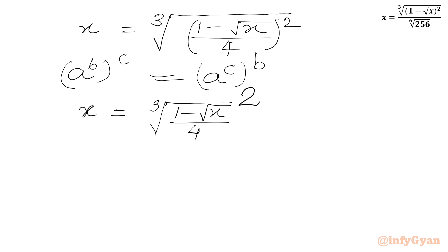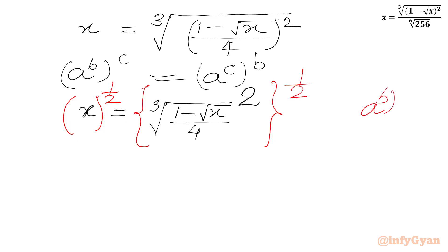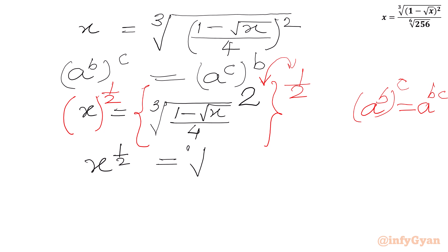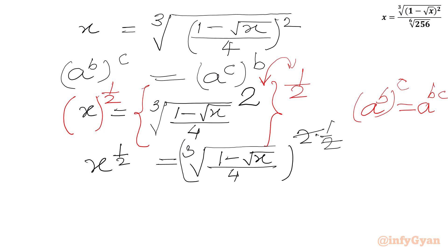Now I will raise both sides to the power of 1/2. On the left-hand side we get x^(1/2). On the right-hand side, the powers 2 and 1/2 multiply to give 1. So the equation simplifies to x^(1/2) equal to cube root of (1 minus square root x over 4), which means square root x equals cube root of (1 minus square root x over 4).